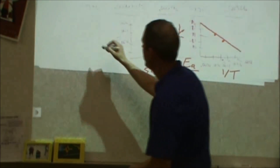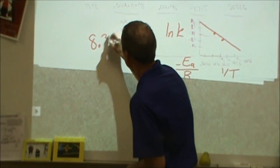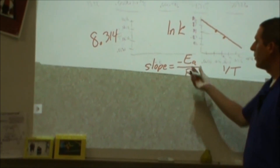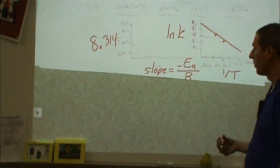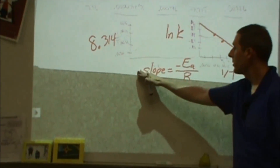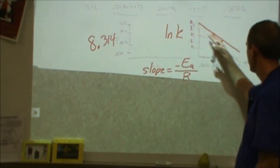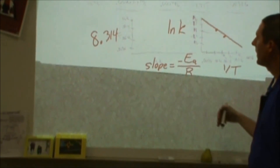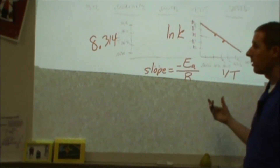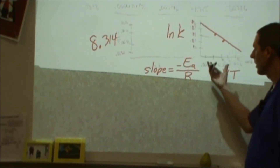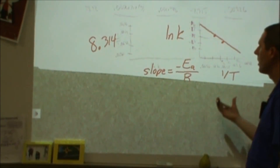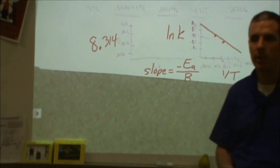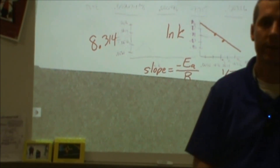The R value to use is 8.314 J/(mol·K)—the gas constant. This gives activation energy in units of joules per mole. Note the slope is negative, so when you multiply by −R both negatives cancel and you get a positive activation energy. That's the full process: find the rate law, determine rate constants at different temperatures, plot ln(k) vs. 1/T, and solve for the activation energy.